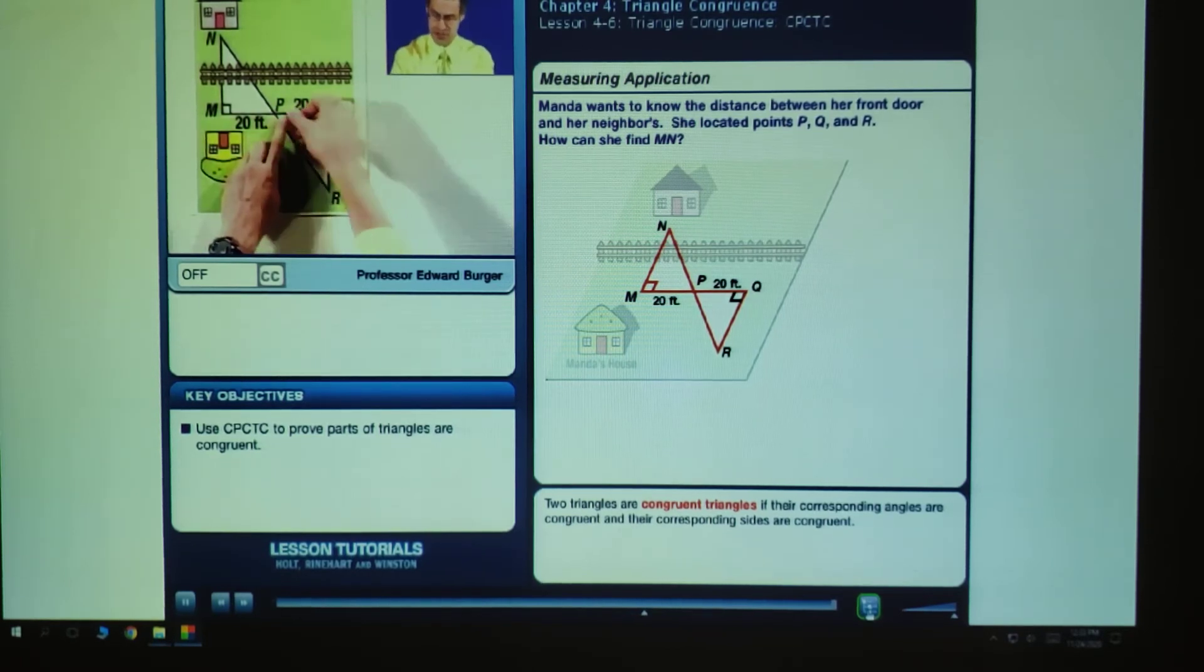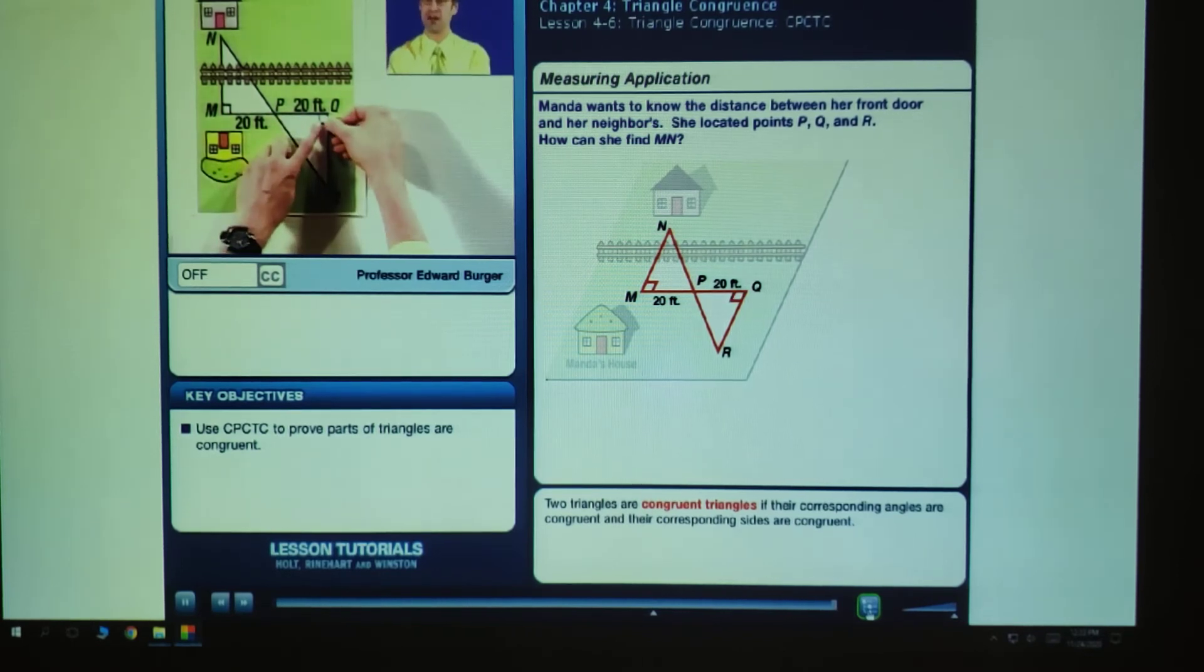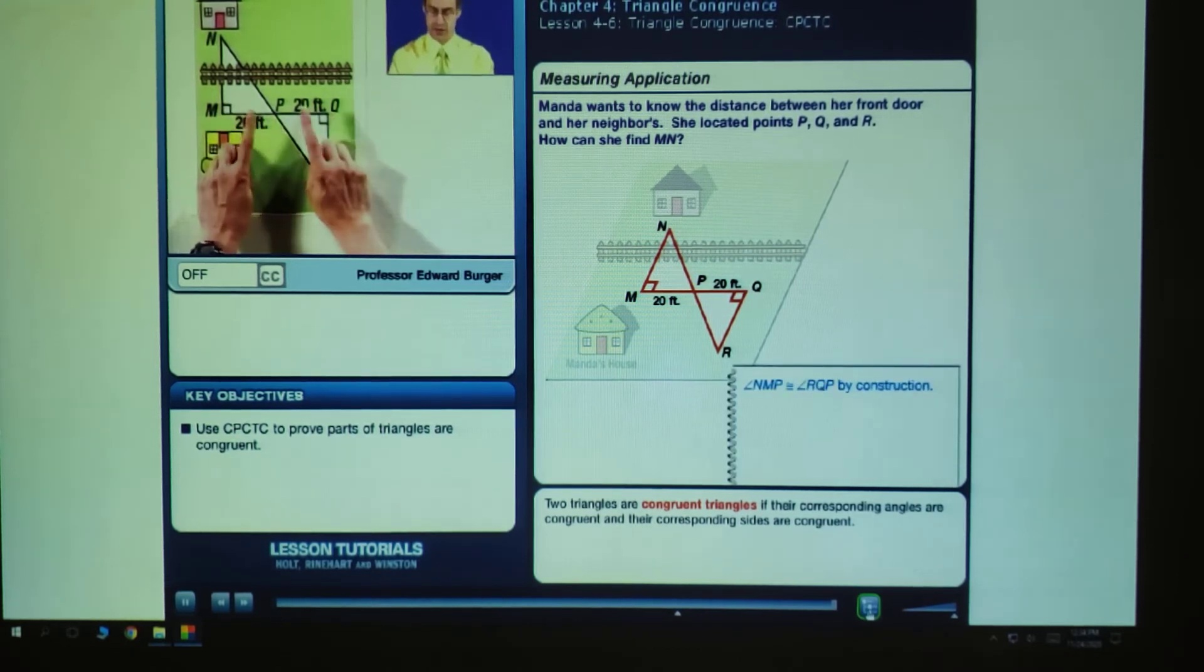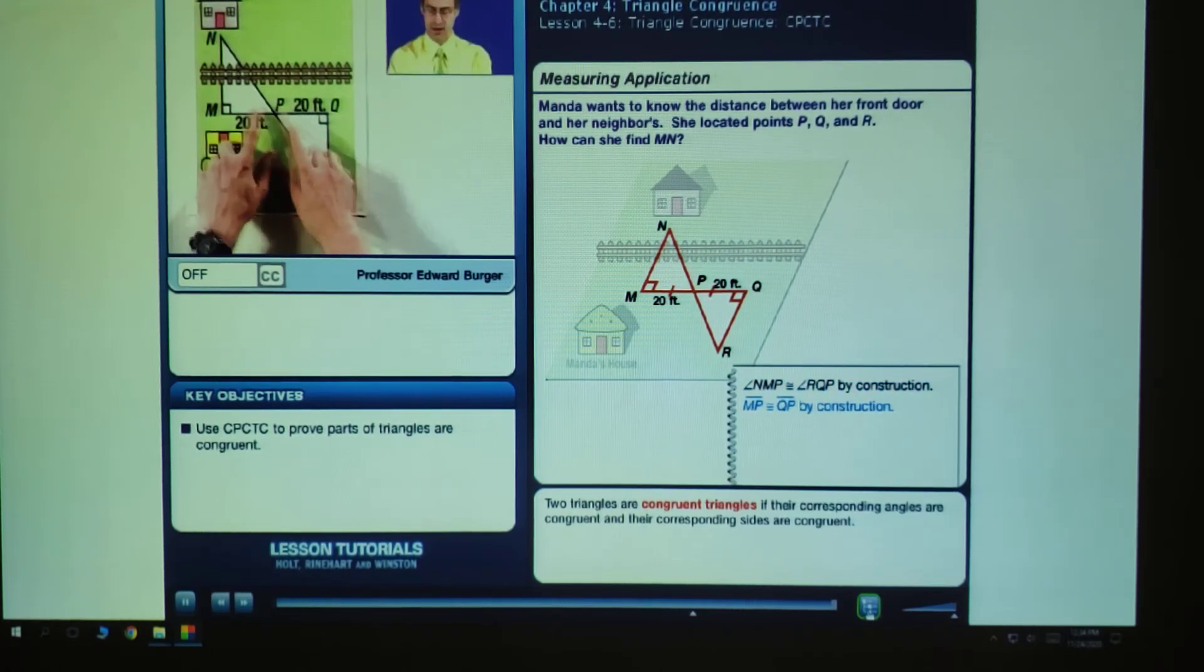And this, by the way she constructed this side, forms a 90 degree angle. So look what we have here. We have that these angles, these corresponding angles, are congruent. We know that these corresponding sides are congruent. And what about these angles right here? They are vertical angles. And we know that vertical angles are congruent.